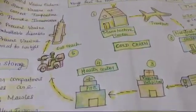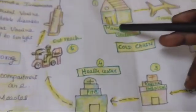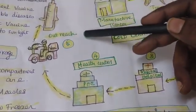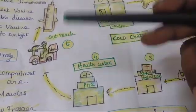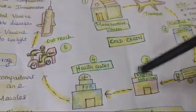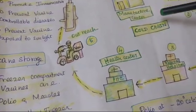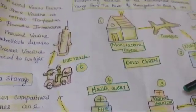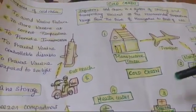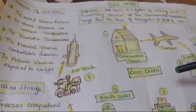So, cold chain is nothing but maintaining the correct temperature of the vaccine from the place of manufacture to the outreach area where the vaccine is delivered or administered to children. During that entire period, the potency of the vaccine should not be lost — otherwise there is no use in giving vaccination. As a community health nurse, you have to follow the cold chain, instruct the ANM and ASHA workers involved, and tell them the importance of cold chain. Otherwise, there is no use in giving vaccination to the community.